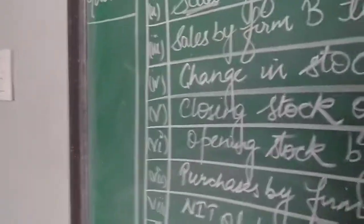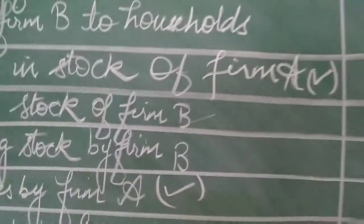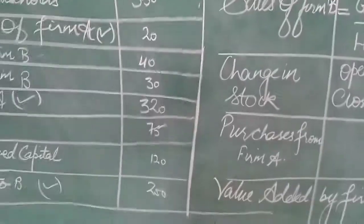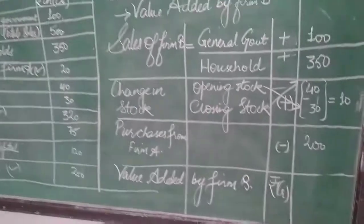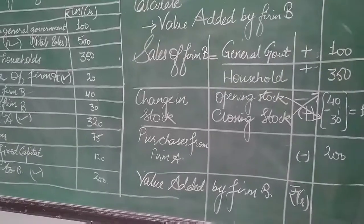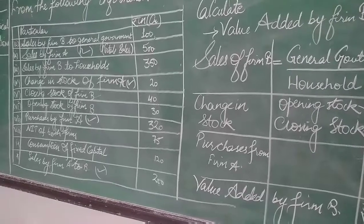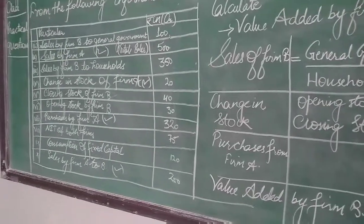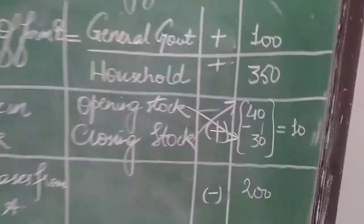Then we have purchases from firm A. How we get it? Because firm A has sold to B. So what did B from A purchase? So it will automatically be 250, 200. So we have 200. This is 200. And this has been shifted here. This is sales by firm A to B. So this will be there. Now let's calculate the value of this question.